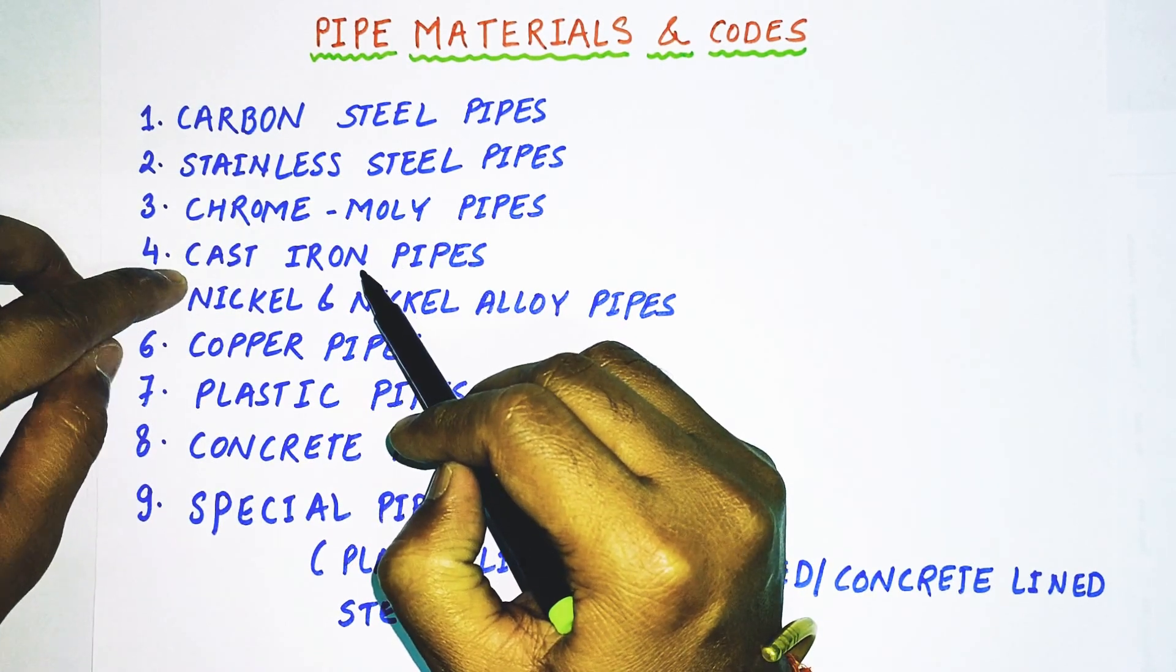That is why it is used in water treatment, chemicals, and acid drainage systems. Friends, with this we have understood cast iron pipes, stainless steel pipe, chrome molly, and carbon steel pipe. Other piping materials are also there but we will not learn about the other materials in this lecture.